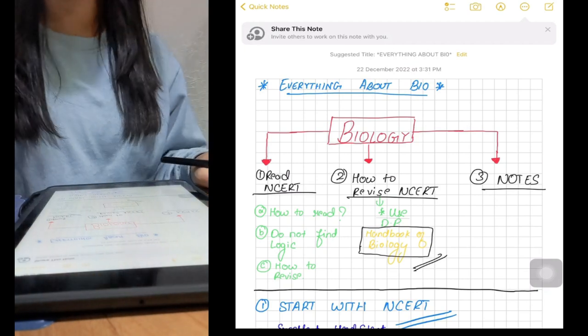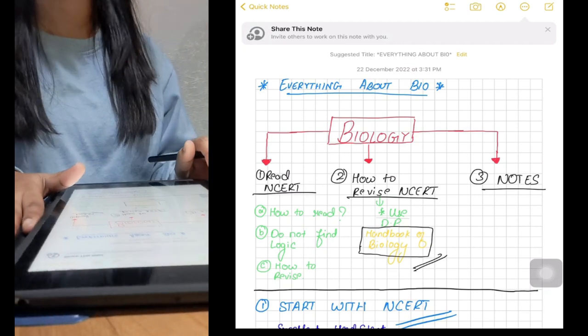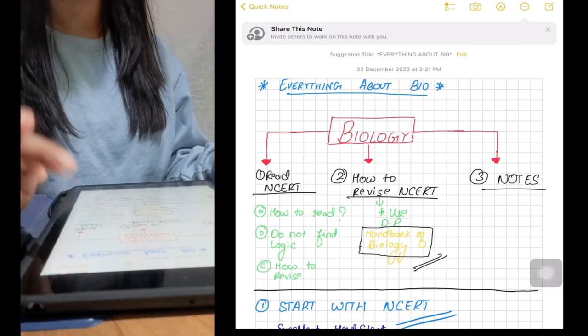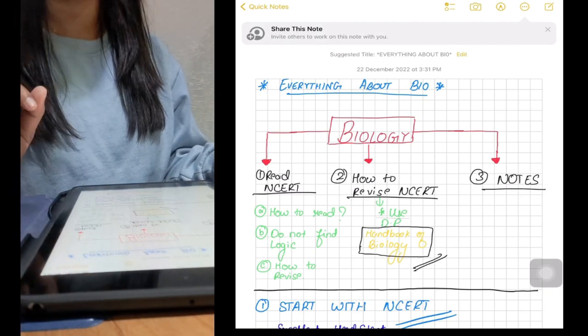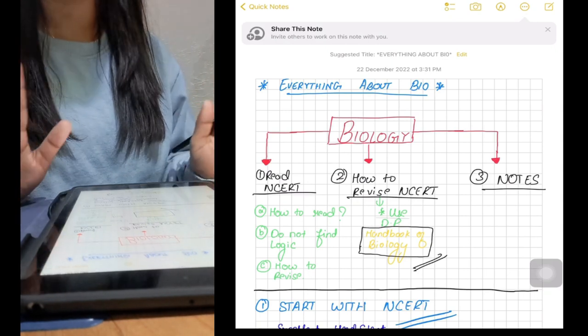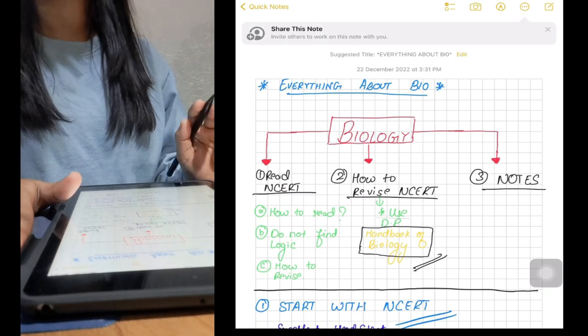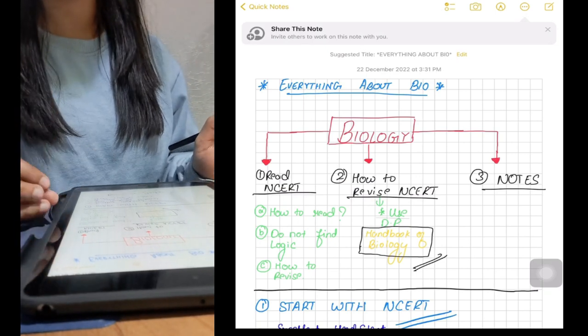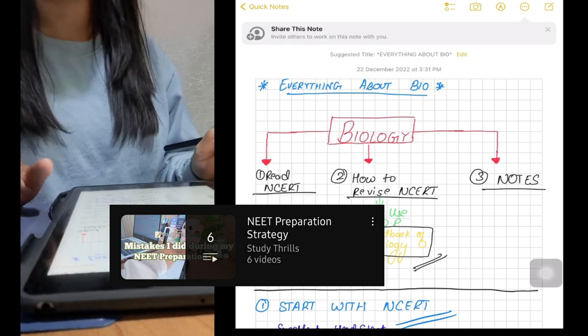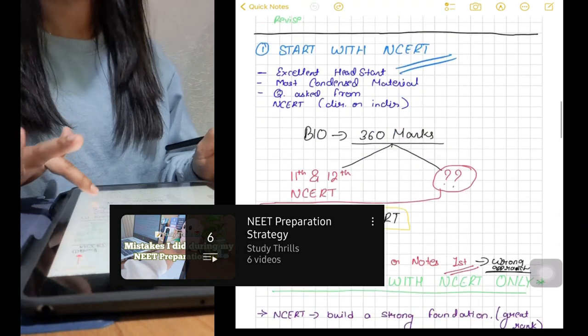Hello everyone, welcome back and I hope you guys are doing well and staying safe. Myself Priya and currently I'm a med student and I scored 616 in NEET 2022. In this video we are going to discuss everything about bio and how to score 360 out of 360 in bio NEET. I have created a playlist for NEET preparation strategy, you can definitely check it out and for now let's begin with this video.